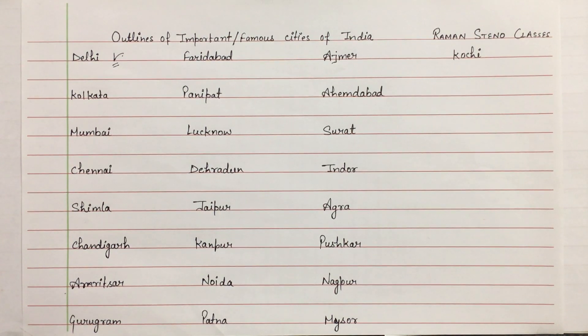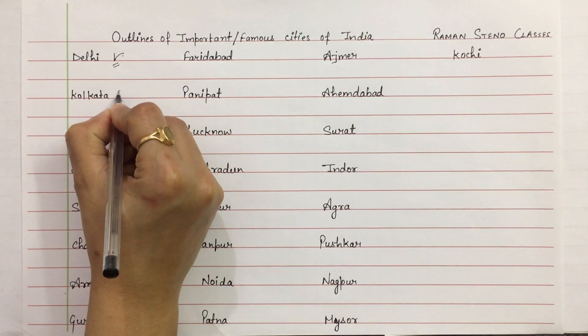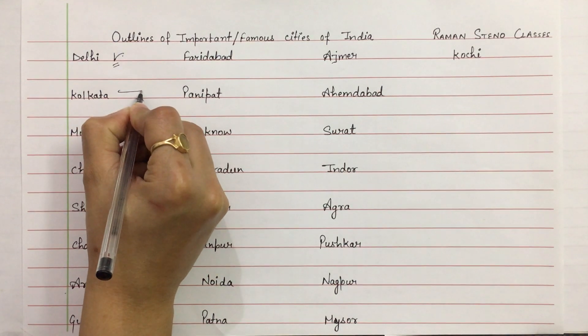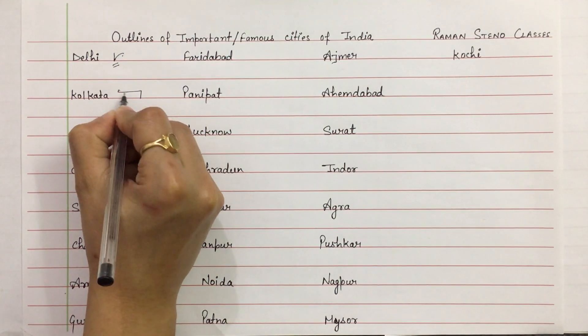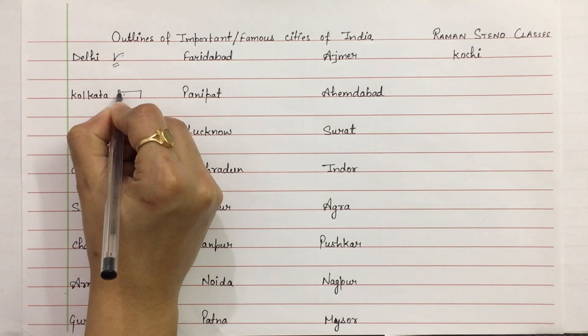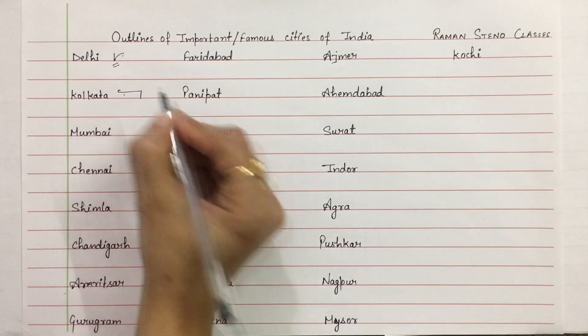Next is Kolkata — on the line. With K, we will employ hook L, then K and T. Vowel A: Kolkata.